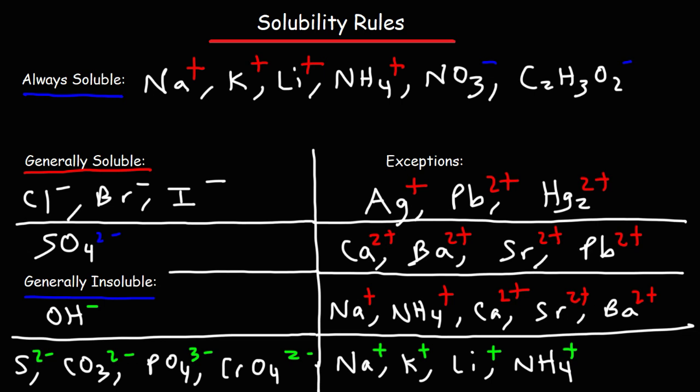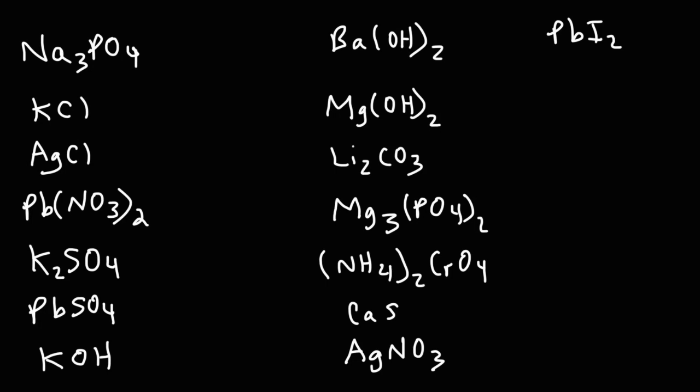Now let's put this information into practice with some example problems. First: sodium phosphate — is it soluble or insoluble? Based on the solubility rules, anytime you see a Group 1 metal ion like sodium, potassium, or lithium, it's going to be soluble. So we represent this as aqueous, meaning it dissolves in water.